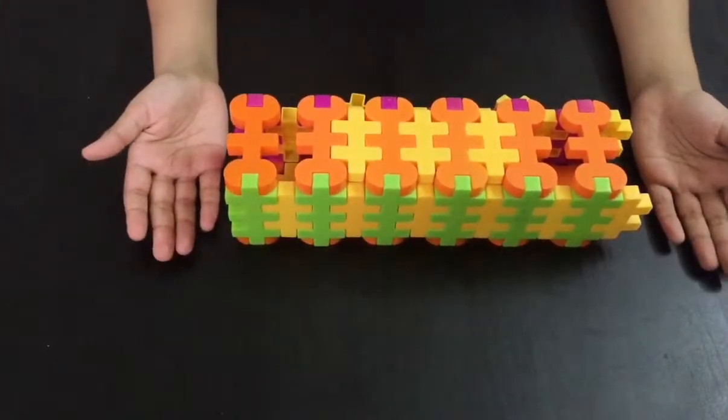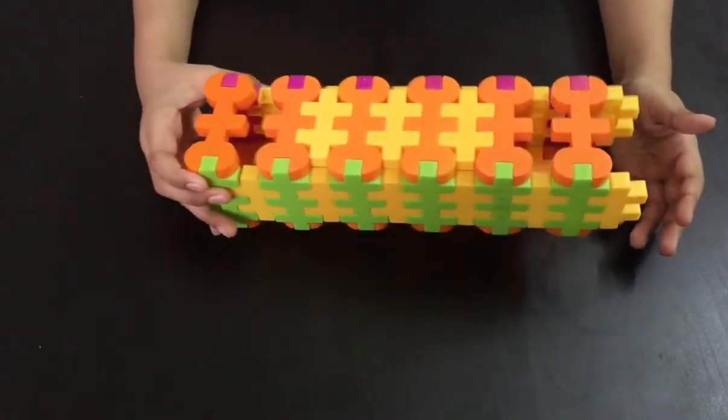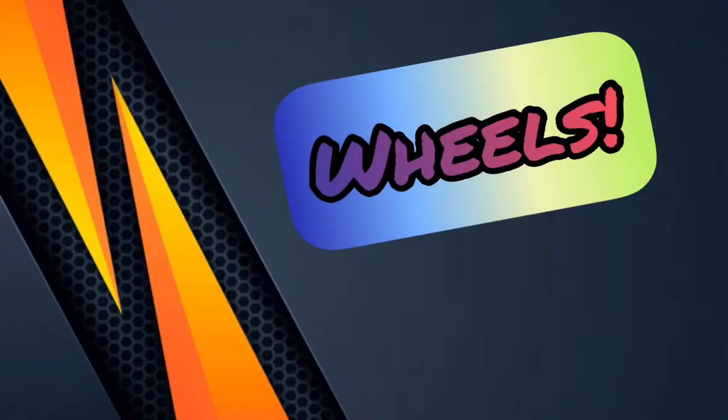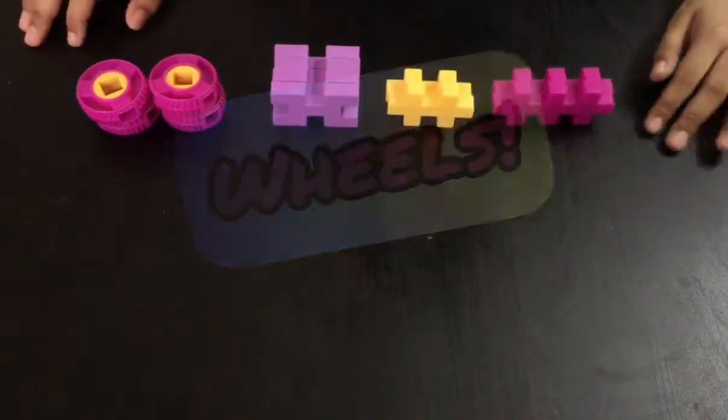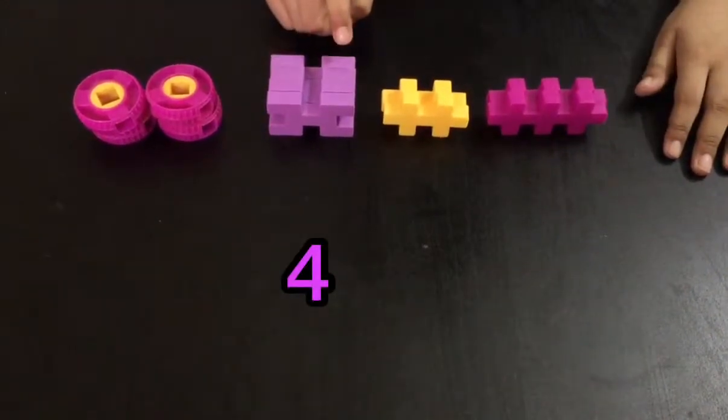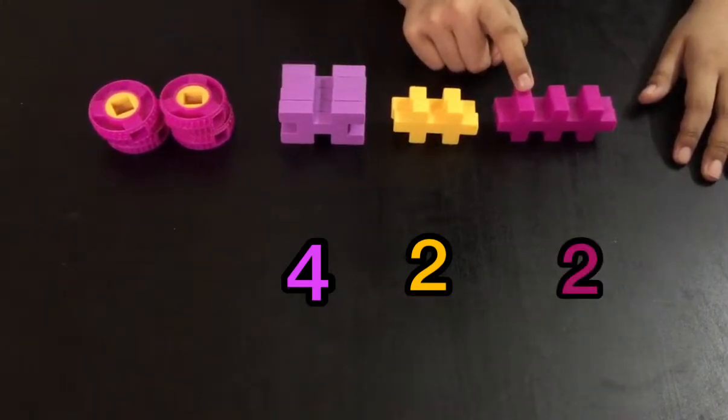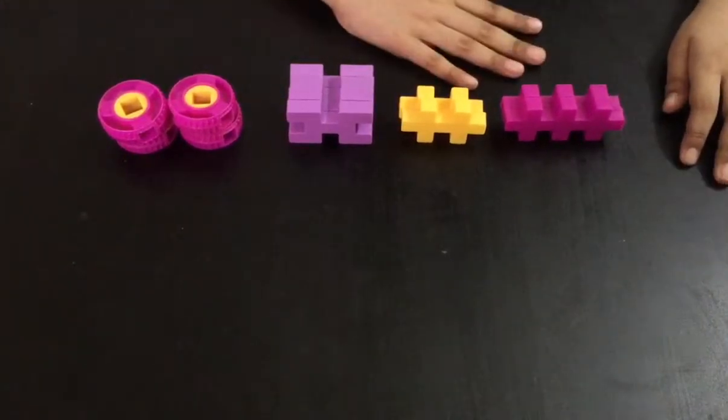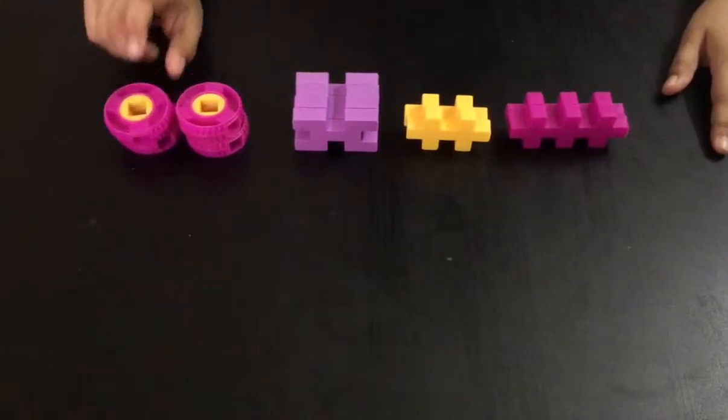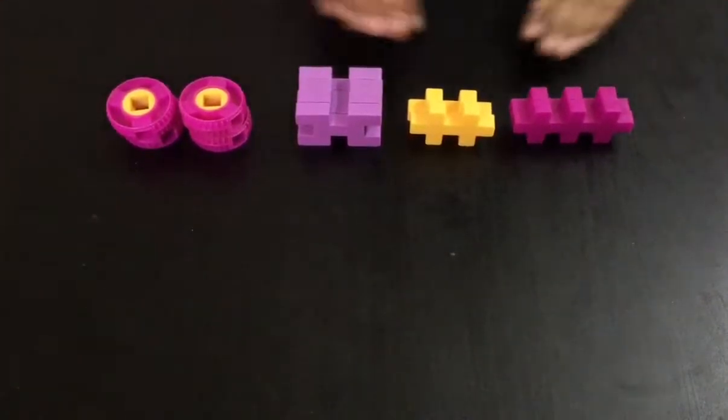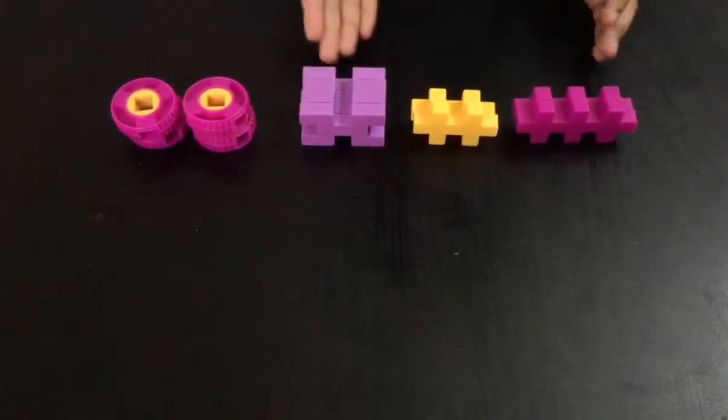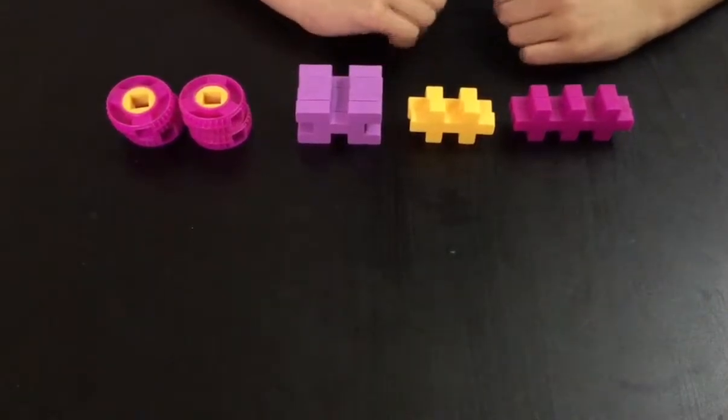Now I'll show you the requirement for the wheels. We will need four purple blocks, two yellow blocks, two darting blocks and four wheels. I know you must be thinking, just for one axle, why do we need all these pieces? Let me show you.